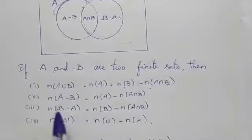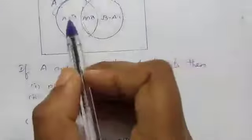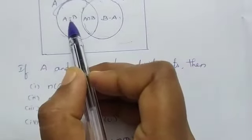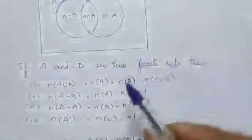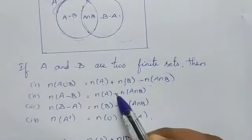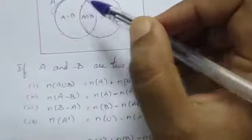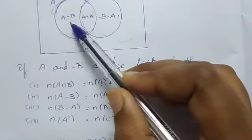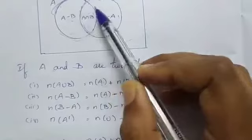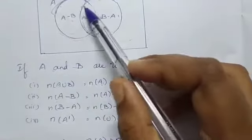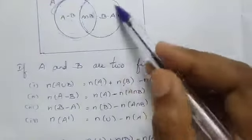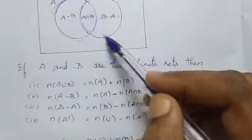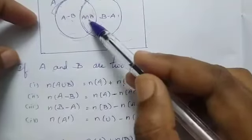Second result: N of A difference B is equal to N of A minus N of A intersection B. This is the portion of A difference B. If you want to find N of B difference A, it equals N of B minus N of A intersection B.